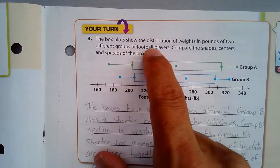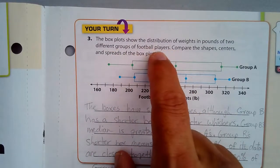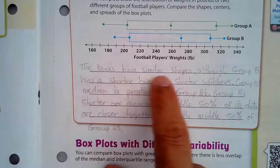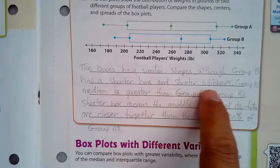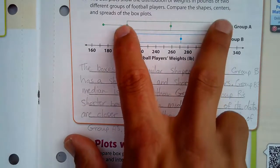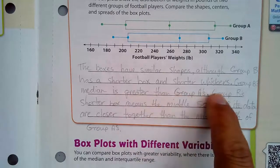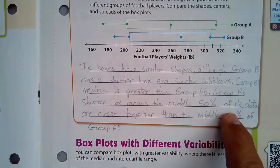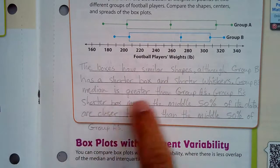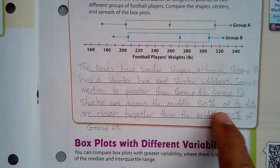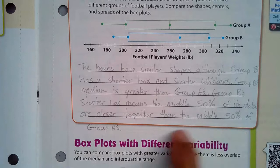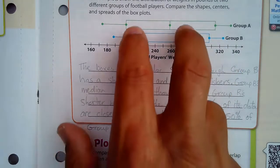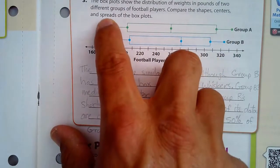The box plots show the distribution of weights in pounds of two different groups of football players. Comparing shapes, centers, and spreads: the boxes have similar shapes, although Group B has a shorter box and shorter whiskers than Group A. Group B's median is greater than Group A's. Group B's shorter box means the middle 50% of the data is closer together — a tighter spread than Group A.